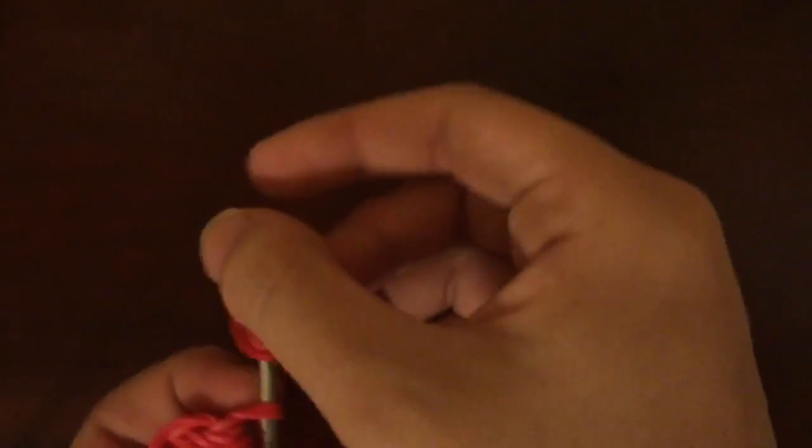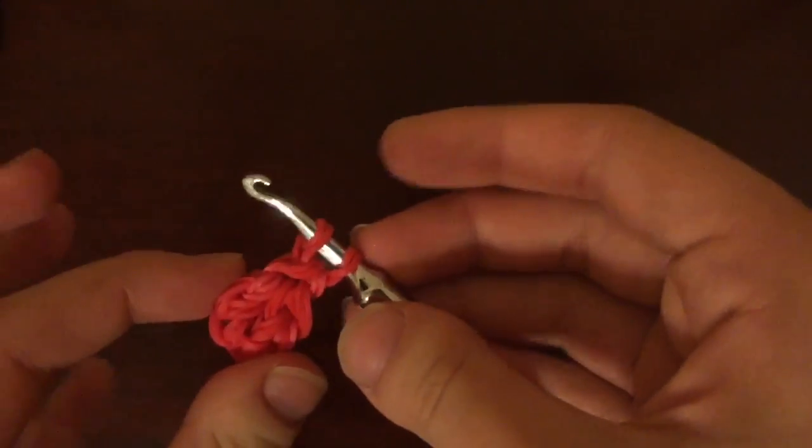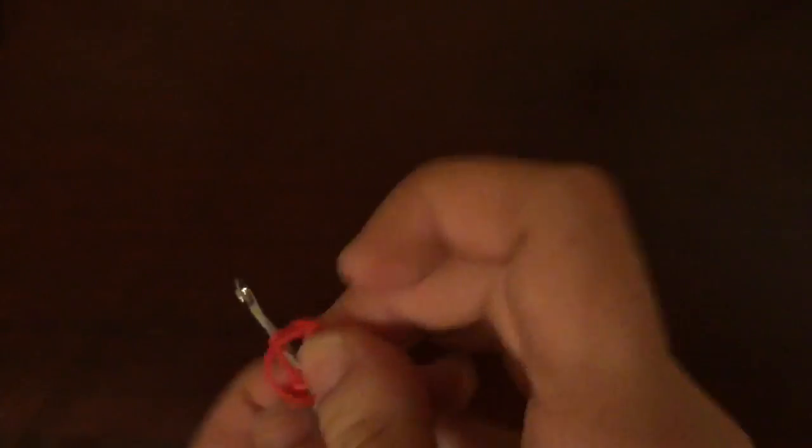So it should look something like this at this point, and I'm going to add 2 more rubber bands. And it should look like this, and lastly for the red rubber bands, another set of 2.